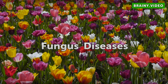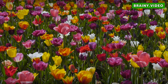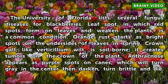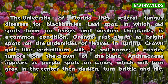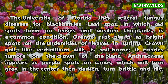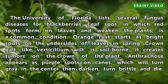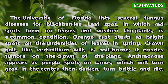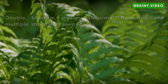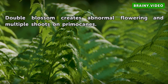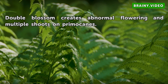The University of Florida lists several fungus diseases for blackberries. Leaf spot, in which red spots form on leaves and weaken the plants, is a common condition. Orange rust starts as bright spots on the undersides of leaves in spring. Crown gall, like verticillium wilt, is soil-borne and creates growths on the crown of the plant. Anthracnose appears as purple spots on canes, which will turn gray in the center, then darken, turn brittle, and die. Double blossom creates abnormal flowering and multiple shoots on primocanes.